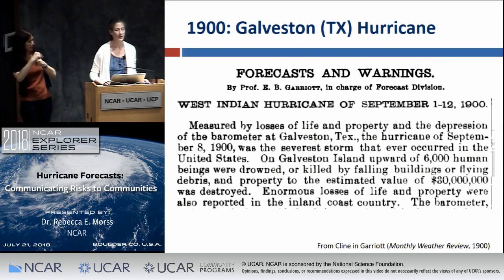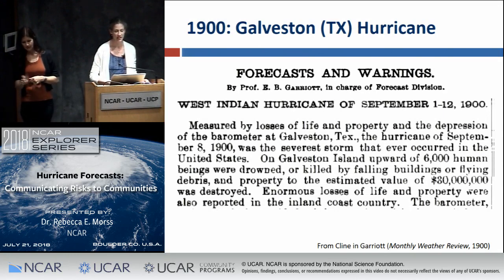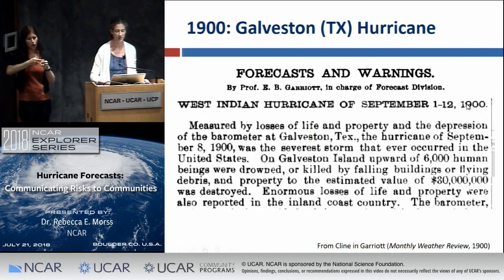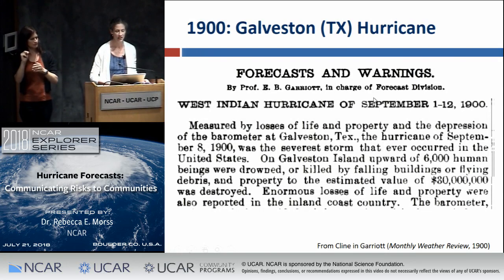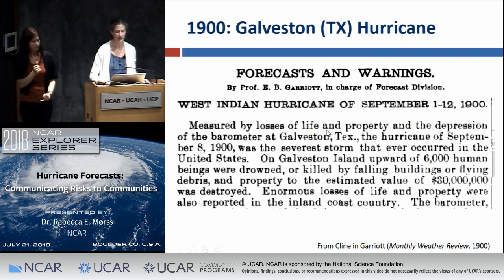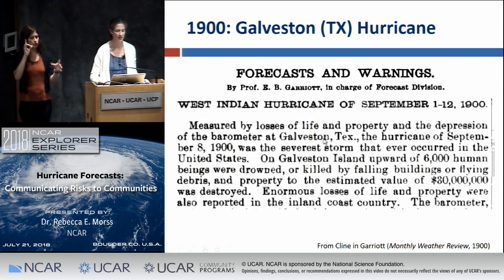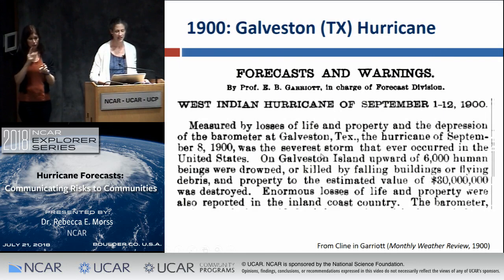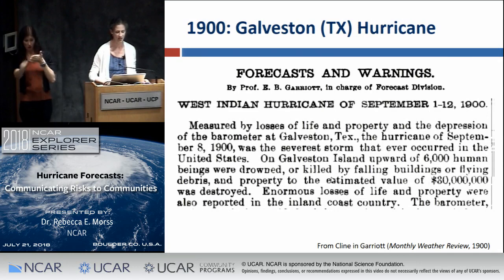Now I'll go back in time and illustrate that with examples from hurricanes. The Galveston hurricane affected Texas in 1900. An excerpt from a journal calls it the 'West Indian hurricane of September 1900' — before hurricanes had naming conventions. Measured by loss of life and property, the hurricane of 1900 was the severest storm that ever occurred in the United States. On Galveston Island more than 6,000 people were drowned or killed, and the estimated loss was 30 million dollars in 1900 dollars.